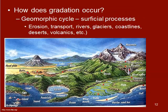Gradation happens through erosion, which we'll talk about in weeks four, five, and six, covering streams, glaciers, and similar topics. Part of this geomorphic cycle is erosion and deposition — taking solid rocks, breaking them into sediments, transporting them, and depositing them elsewhere where they eventually become sedimentary rocks. Agents include rivers, glaciers, beaches and coastlines with waves, deserts with wind, and volcanic activity.